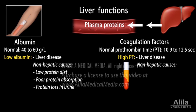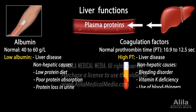However, patients with bleeding disorders, vitamin K deficiency, and those who take blood thinning medications, such as warfarin, may also have high PT without having liver problems.